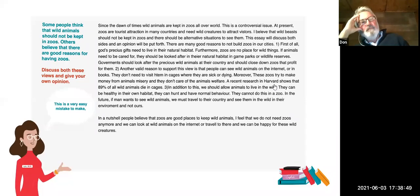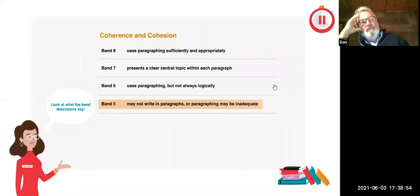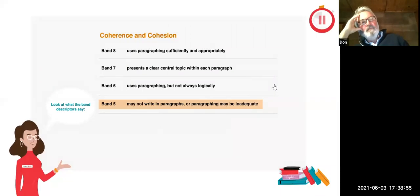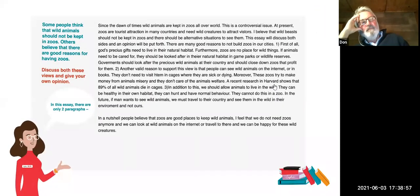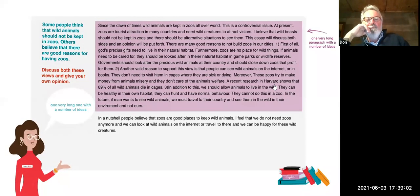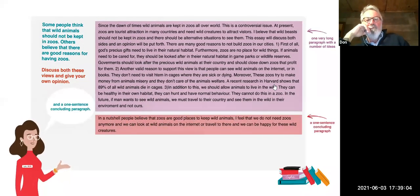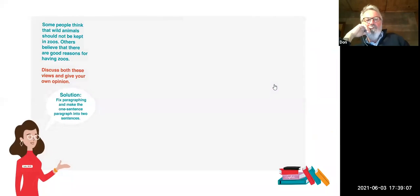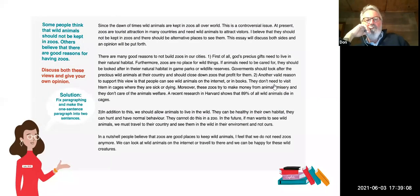Mistake one: poor paragraphing. This is a very easy mistake to make but very costly. In this essay, there are only two paragraphs — one very long one with a number of ideas, and a one-sentence concluding paragraph. Solution: fix paragraphing and make the one-sentence paragraph into two sentences.